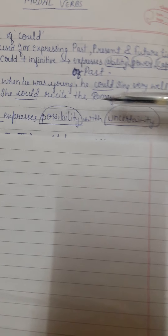Just to remind you, we use 'can' for expressing ability, power, or capacity of the present and future, but here ability, power, or capacity of the past is being expressed through the usage of 'could.' The next usage is: 'could' expresses possibility with uncertainty.